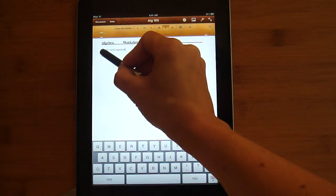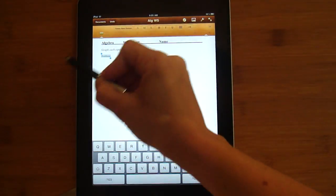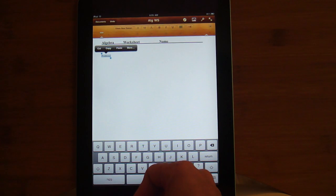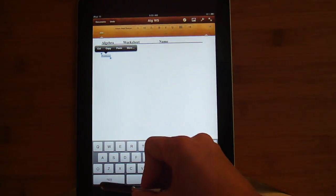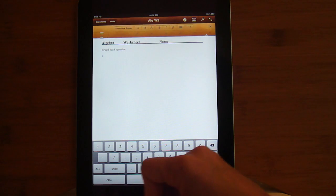I'm going to ask the students to graph each equation. And my placeholder for my problems. I'm going to go ahead and put the numbers in where I'm going to want them. I'm going to do two equations. Problem number one.